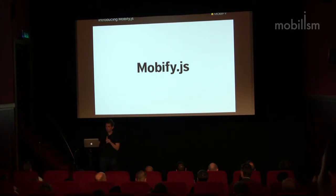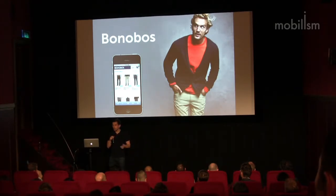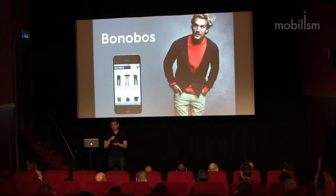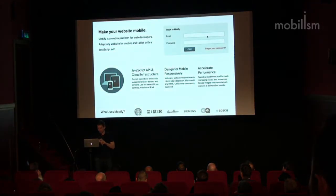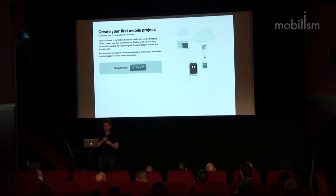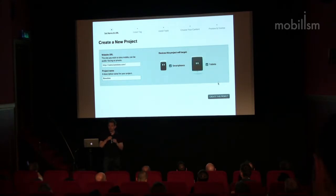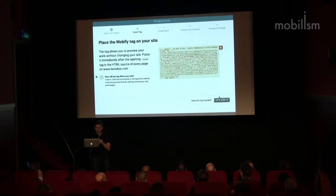I'm going to show you how the tools work using one of our customers as an example — a company called Bonobos, an e-commerce retailer based in New York. They launched on an in-house e-commerce cart, then moved to Magento, and wanted to create a mobile version of their site on the same URL. Right now I'm going to mobify.com, the cloud portion of our platform. The first thing you do after signing up is create a project for your new adaptation — you can target smartphone, tablet, or both.